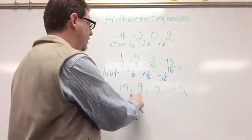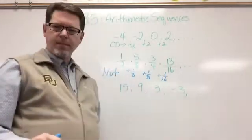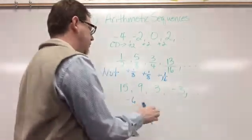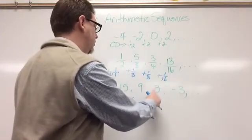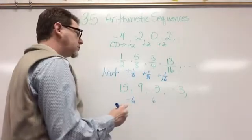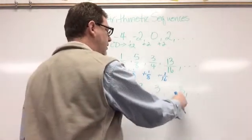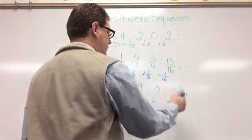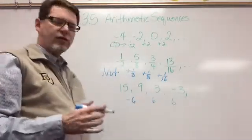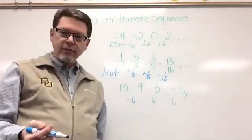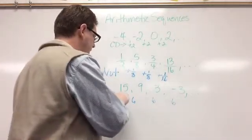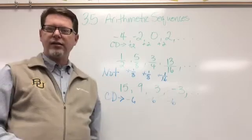What about 15, 9, 3, and negative 3? From fifteen to nine, I subtracted six. Nine to three, I subtracted six. Three to negative three, I subtracted six. Do I have a common difference for all of them? Absolutely. So it is an arithmetic sequence and the common difference is negative six.